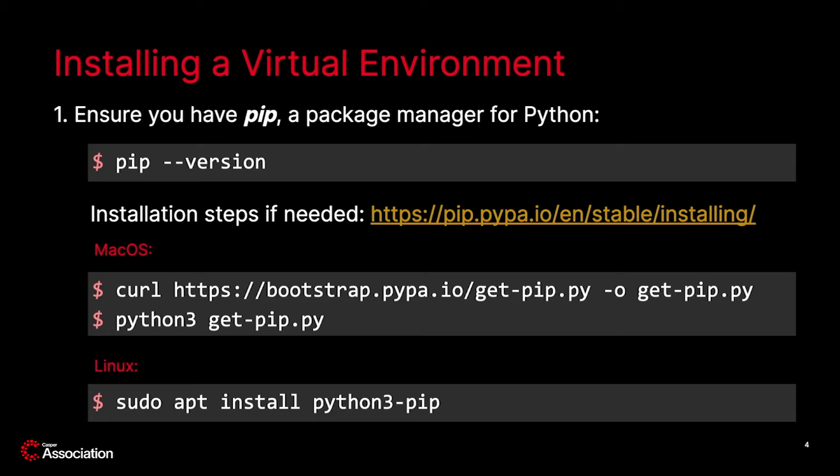We will show you how to run NCTL in a virtual environment. If you want to run it at the system level you can, but we recommend that you only do that if you are sure you know what you are doing. First, you will need to install a set of tools required for NCTL. The first step is to install PIP, a package manager for Python. PIP comes with Python 3, and if you do not have it already you can follow these steps.